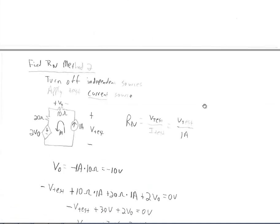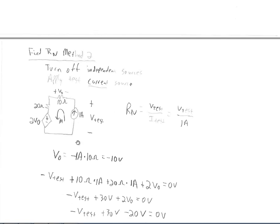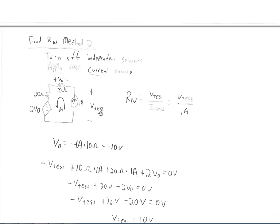We can also approach this by applying a 1 amp test current source instead. Note: the voltage across the terminals here is V-test, not VO — that was a mistake made earlier. RN is still V-test divided by ITest, and here ITest is 1 amp. With 1 amp flowing, VO equals negative 1 amp times 10 ohms, because the current flows backwards through the 10 ohm resistor, giving VO equals negative 10 volts.